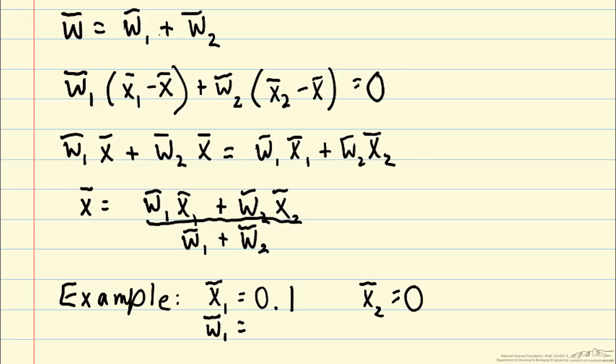And then let's consider an inlet flow rate in stream one of one kilogram per second, and w2 of three kilograms per second. So you can see we're probably going to dilute the 0.1 down to a lower value.